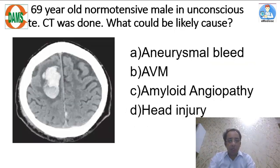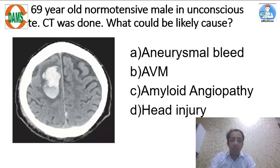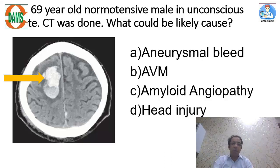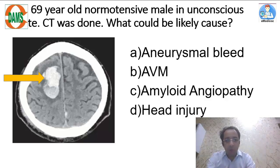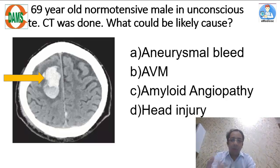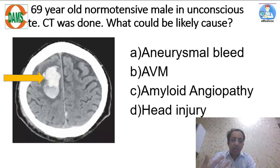The next question is a clinical vignette: a 69-year-old normotensive — meaning no hypertension — unconscious patient. CT shows a hematoma in the frontal lobe — a lobar hematoma. Can this be a hypertensive bleed? The answer is less likely, because hypertensive bleeds usually have a basal ganglia predominance.